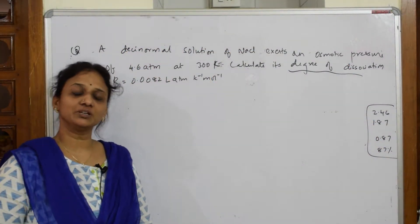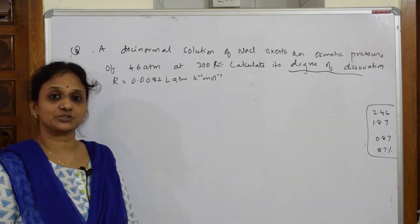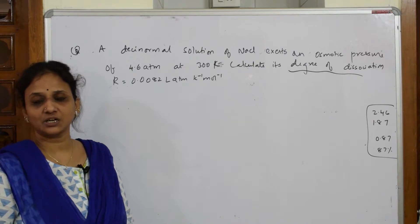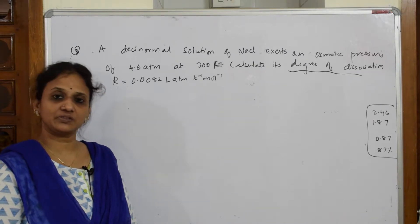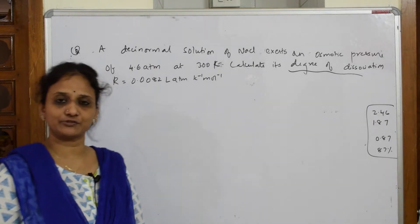So let us come back and do one numerical where you are relating Van't Hoff factor, that is i, with your osmotic pressure. Till now we have done one with elevation boiling point, one with depression freezing point, one with relative lowering of vapor pressure. Now let us come back and do this and further go to the next level of numerical.